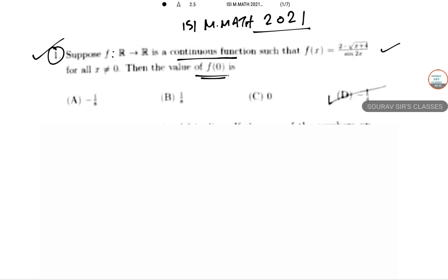There are four options here. I'm sorry for the untidiness — this is an original question paper I just got and haven't published yet. We will be solving this from someone who gave the examination. Since f is continuous, let's find the value of f(0).